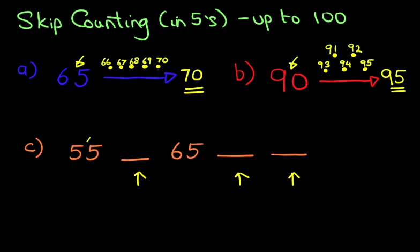So we're starting at 55. We're going to try to work out the first blank number. There's our arrow, and we're going to draw one, two, three, four, five dots. Our starting point is 55, so let's count forwards from 55.